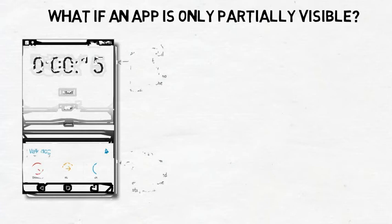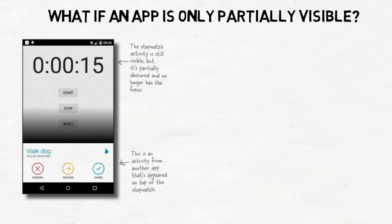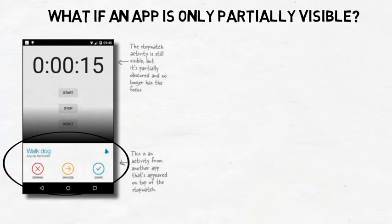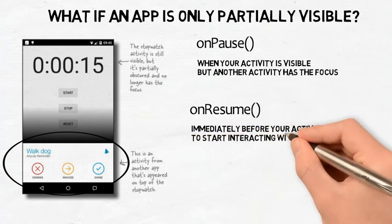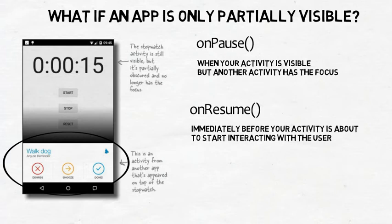What if an app is only partially visible? So far we have seen what happens when an activity gets created and destroyed, and when it becomes visible and invisible. But there's one more situation: when an activity is visible but doesn't have the focus — the activity is paused. This can happen if another activity appears on top that isn't full size or is transparent. There are two lifecycle methods that deal with this: onPause and onResume. onPause gets called when your activity is visible but another activity has the focus. onResume is called immediately before your activity is about to start interacting with the user. If you need your app to react when your activity is paused, you need to implement these methods.